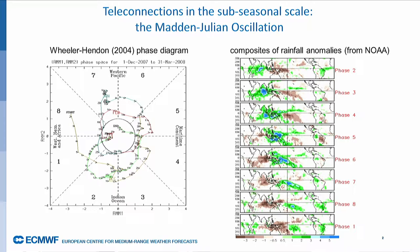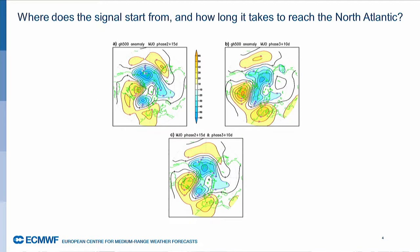You see a very large amplitude of the MJO cycle, especially in this part of the diagram, phase 2 and 3, where the convection is located over the Indian Ocean. These experiments were concerned with one particular aspect.